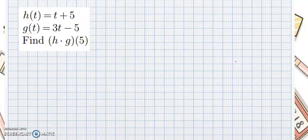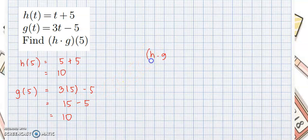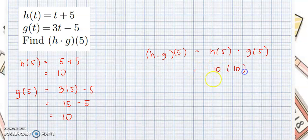How about h times g of 5? We need to get h of 5 first: 5 plus 5 equals 10. Then g of 5 is 3 times 5 minus 5, which equals 15 minus 5, or simply 10. Then h times g of 5 equals h of 5 times g of 5, which is 10 times 10, and that equals 100.